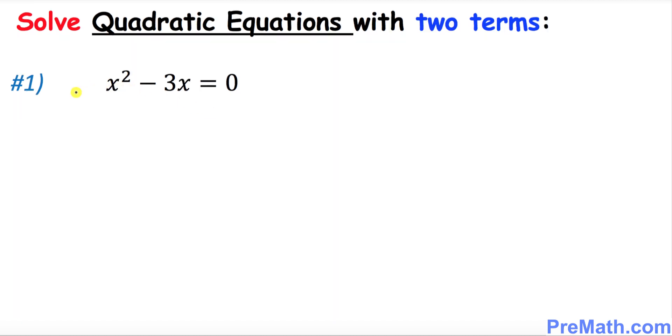Let's start off with question number one. We have x² - 3x = 0. As you can see, x is in common so x could be factored out. We're gonna bring x outside and in parentheses is gonna be x - 3 equal to 0.